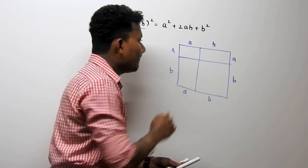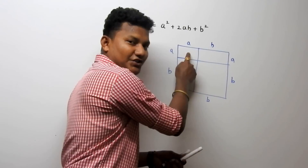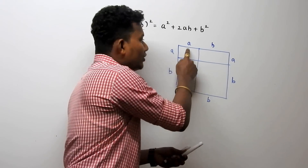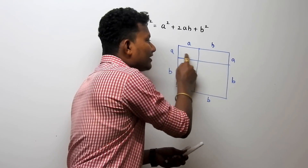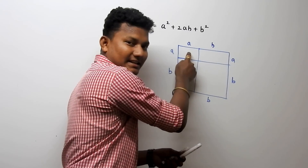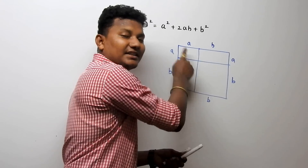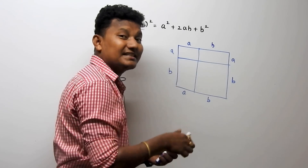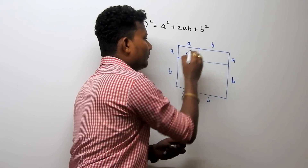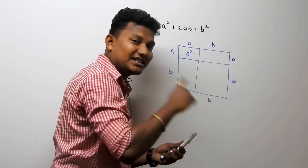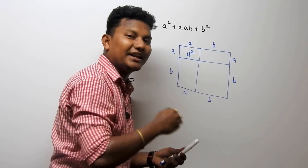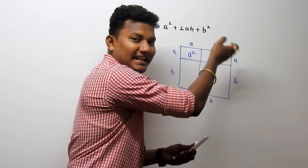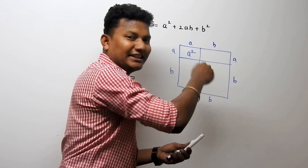Focus on the first box. Its side is 'a', so the area of this square is side squared, which equals a squared. The second box is a rectangle, so its area is length times breadth. The length and breadth are 'a' and 'b', so the area equals a times b.